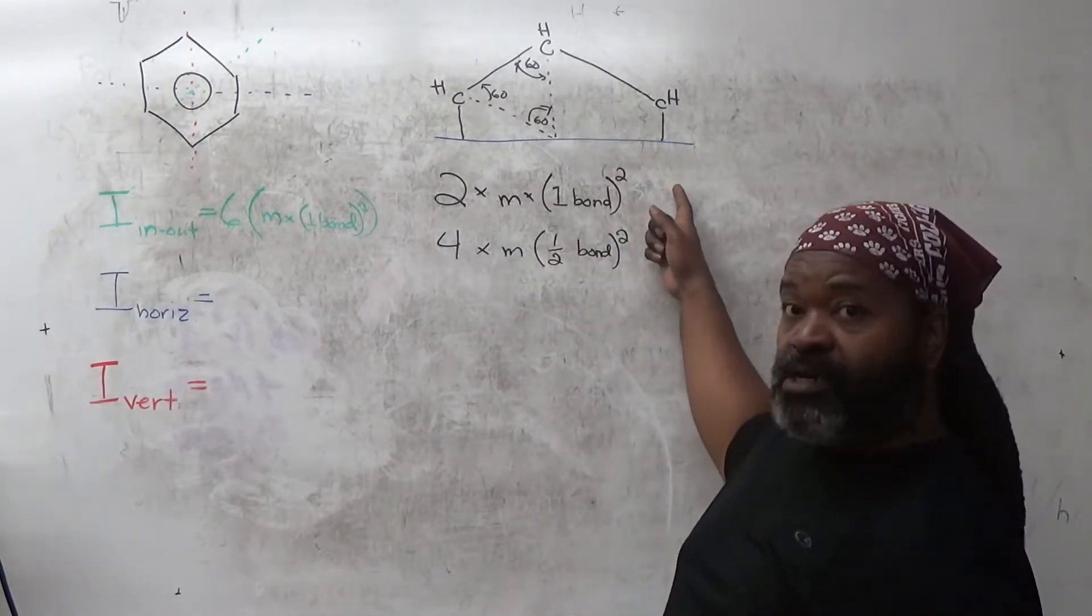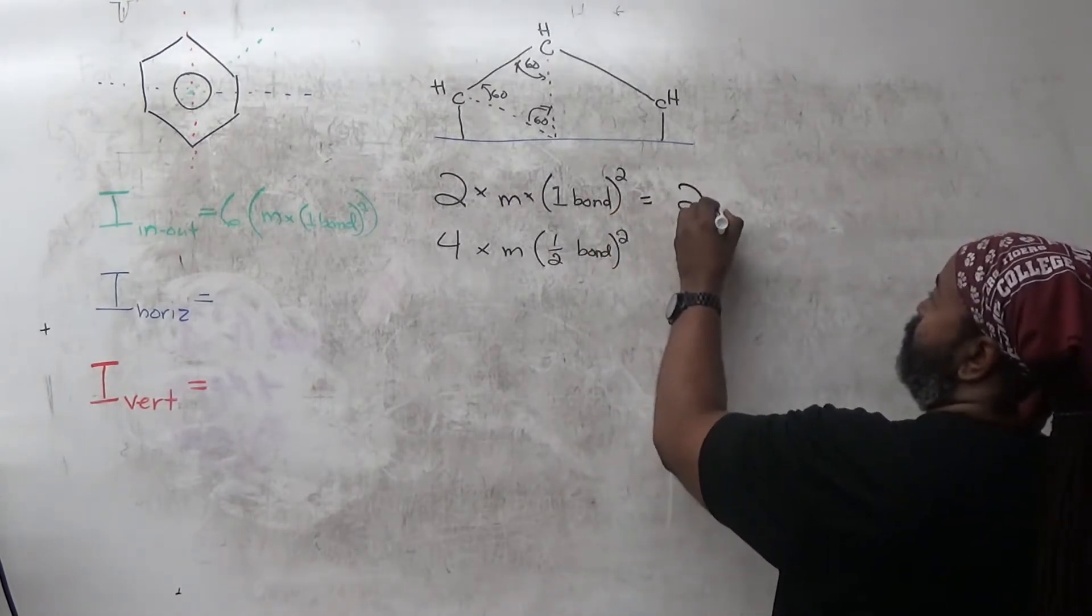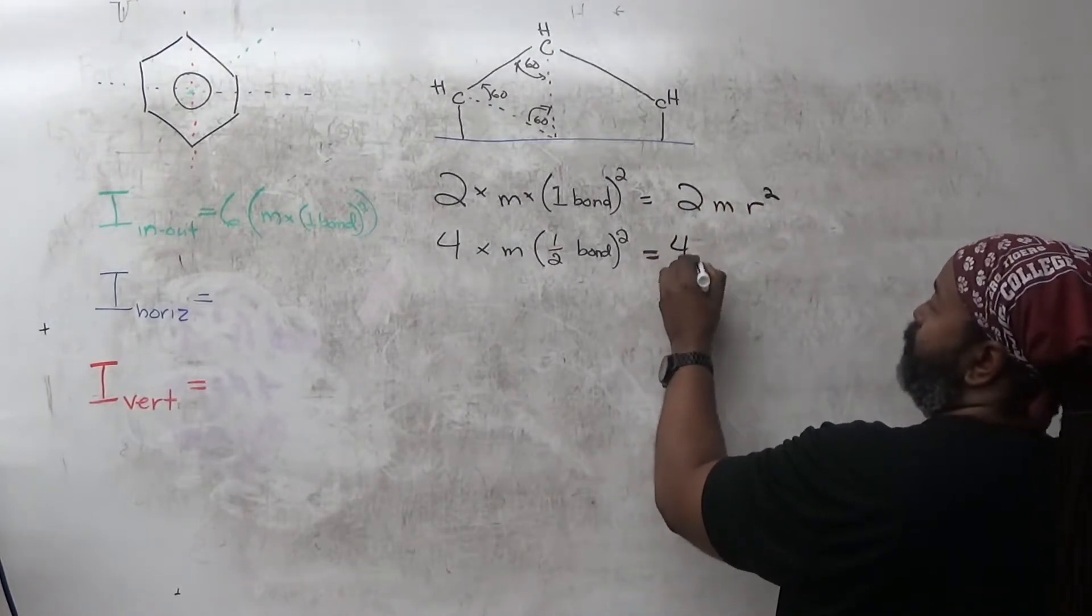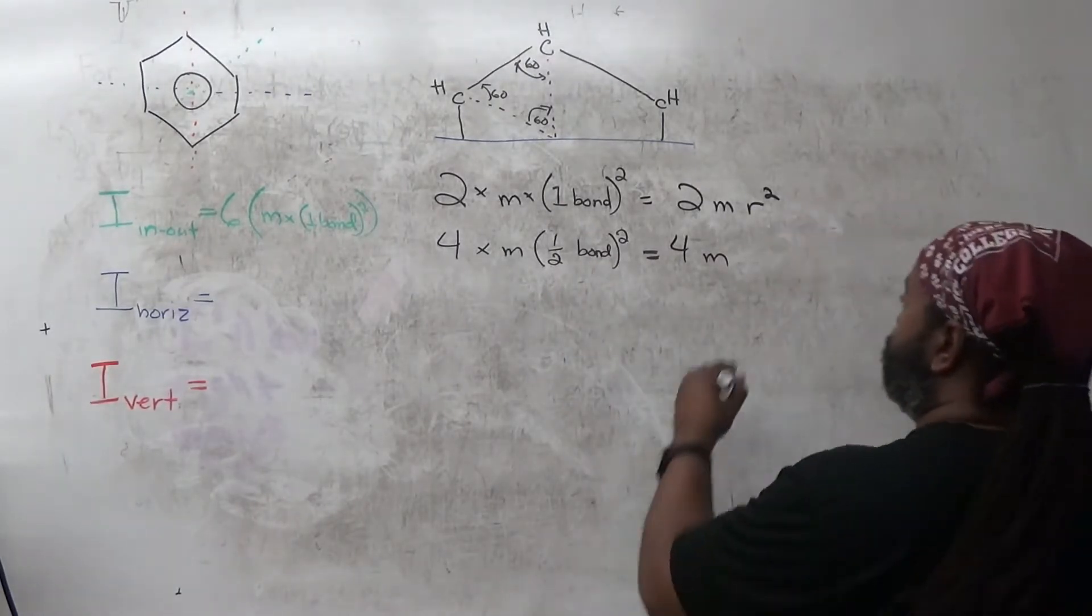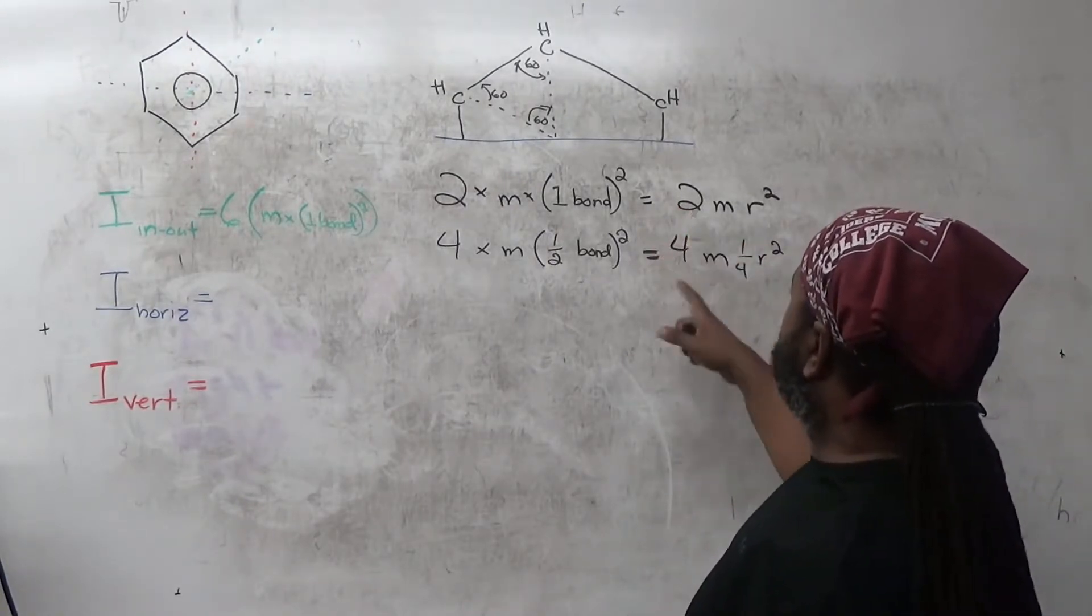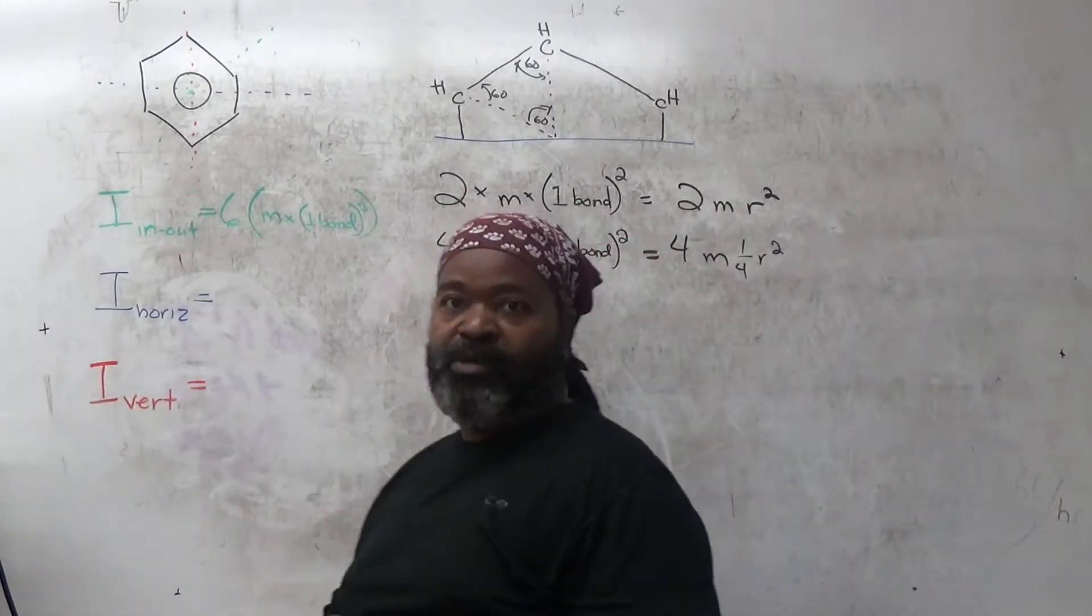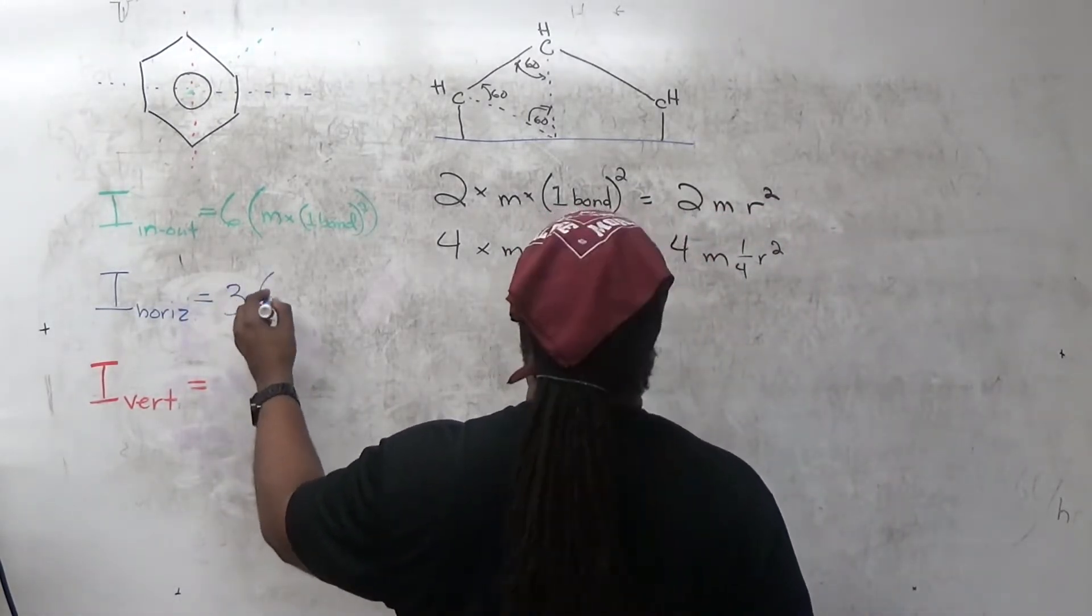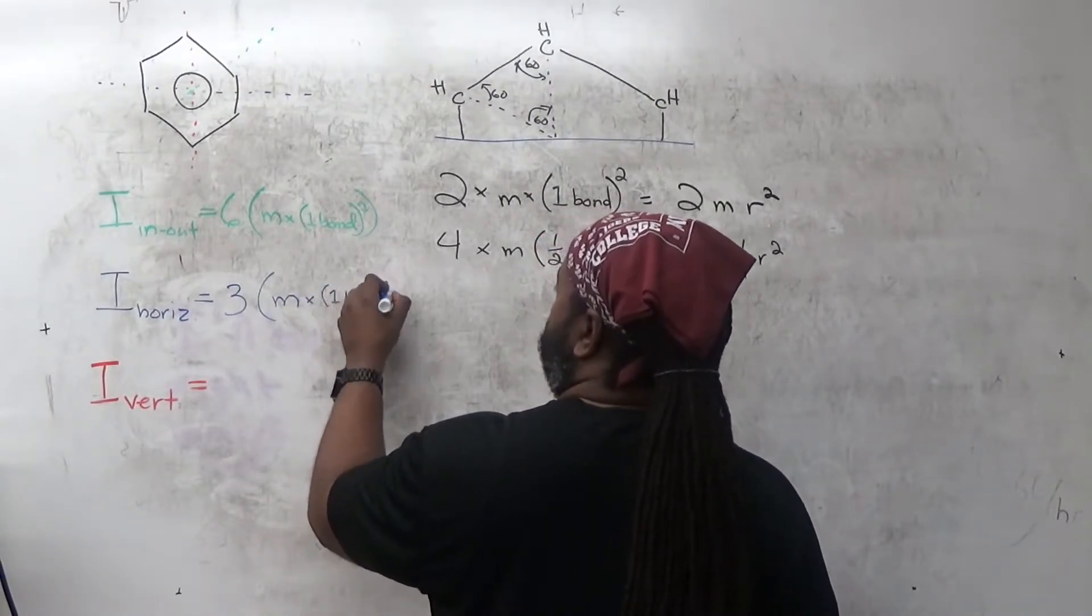So for the horizontal, I'm going to take this all the way over here. So that's just 2mr squared. This is four, and that one half squared gives me one fourth, so that's one fourth r squared. So this is 2, that's going to give me 1. So for the horizontal, my moment of inertia, I'm getting 3 masses times the bond length squared.